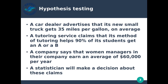Imagine some examples. A car dealer advertises that its new small truck gets 35 miles per gallon on average — quite good gas mileage. If a car dealership says this car gets much better than average gas mileage, how do we actually test that claim? We want to know whether this claim seems reasonable. Similarly, a tutoring service claims that its method of tutoring helps 90% of its students get an A or a B. Again, how can we test this claim?